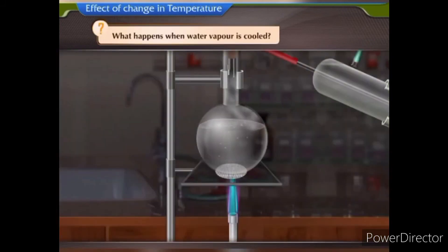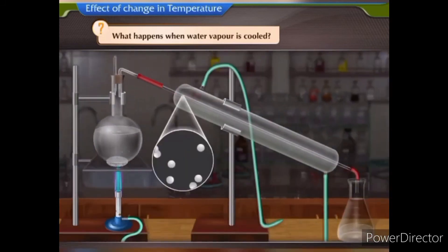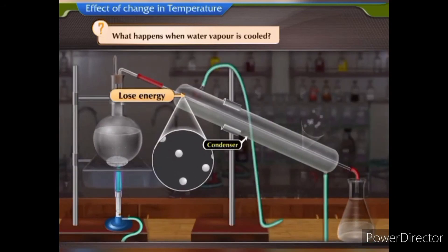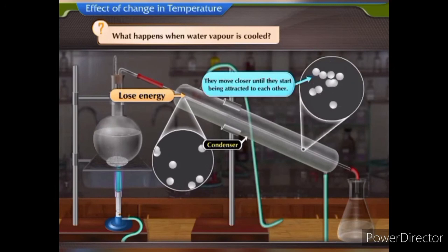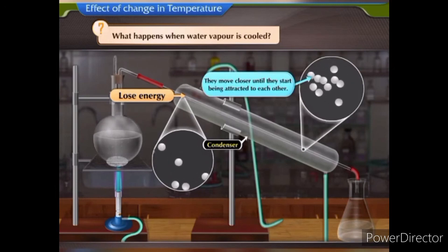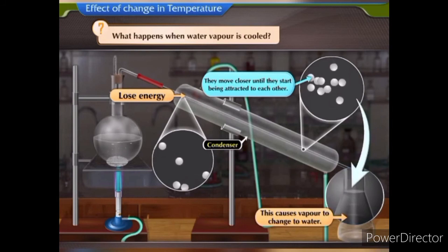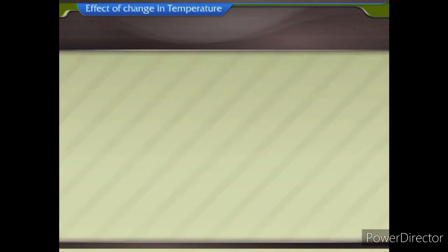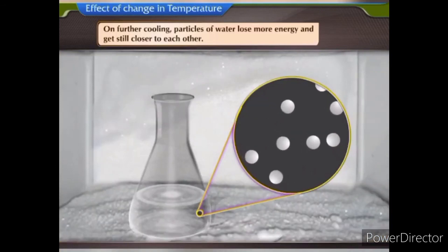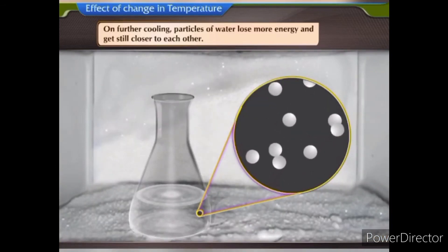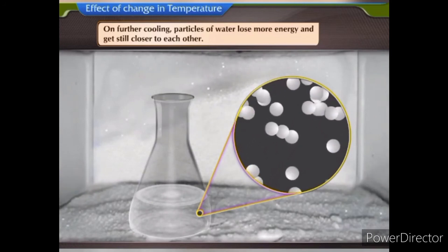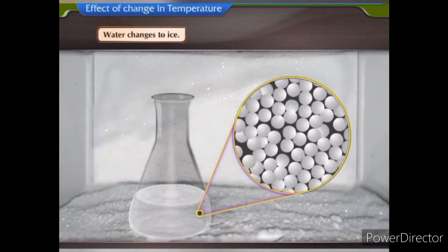What happens when water vapour is cooled? When water vapour is cooled enough, the particles of vapour lose energy. They move closer until they start being attracted to each other, causing vapour to change to water. On further cooling, particles of water lose more energy and get still closer to each other, and gradually water changes to ice.